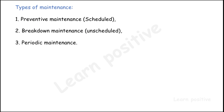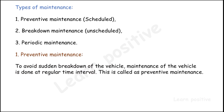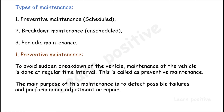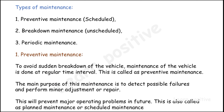In this video, a short introduction to each type of maintenance will be given, with detailed coverage in the next video. Preventive maintenance is done to avoid sudden breakdowns and is carried out at regular intervals. Its main purpose is to detect possible failures and perform minor adjustments or repairs, preventing major operating problems in the future. It is also called planned maintenance or scheduled maintenance.